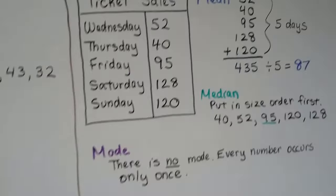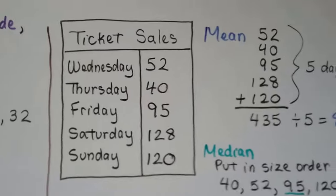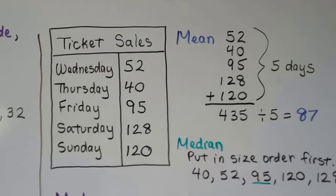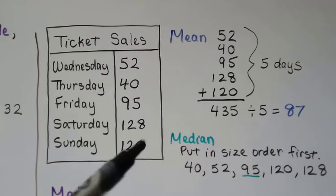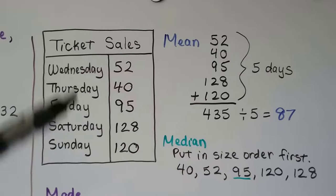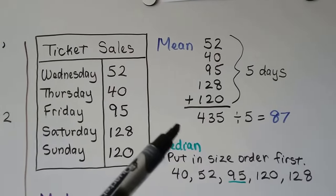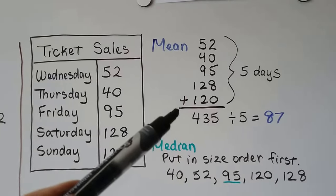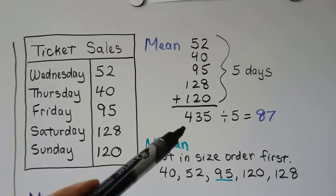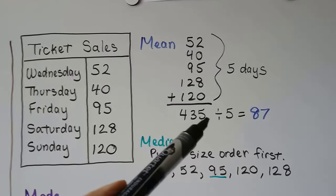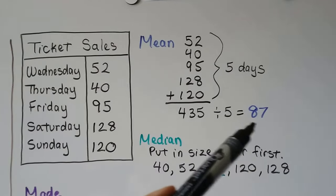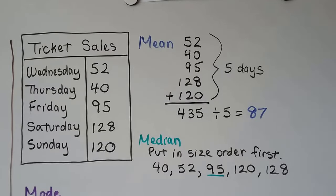Now this one has a table, a chart that says ticket sales, and we can see Wednesday, Thursday, Friday, Saturday, and Sunday's ticket sales. This is how many tickets they sold. To find the mean, there's five days with five numbers. So because we have five numbers, we add the five numbers and get 435 and we divide it by the five because there's five numbers, five days. And we get an 87. That's the mean. That's the average.